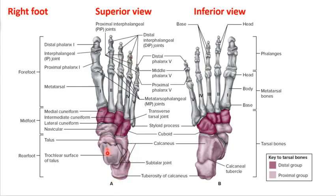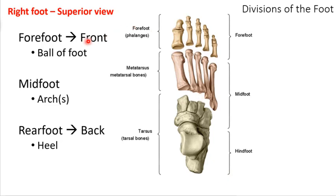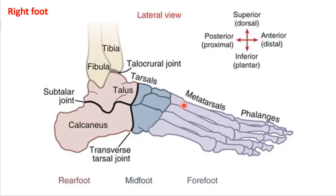The forefoot consists of the metatarsals and phalanges — the toes. The trochlear surface is where the tibia and fibula come in and articulate to make the ankle. We have five toes, referred to as one through five, with the big toe as the first and the pinky toe as the fifth digit. The midfoot is the arch region — the transition between the forefoot and rearfoot — and the rearfoot is the heel.